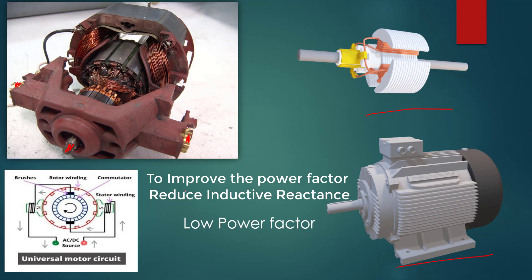To reduce the low power factor, you need to reduce the inductive reactance. This is done by reducing the resistance in the field windings and armature windings — either by decreasing the number of turns, or by using very thick copper wires as you can see here. Using thicker wire reduces the inductive reactance and improves the power factor.